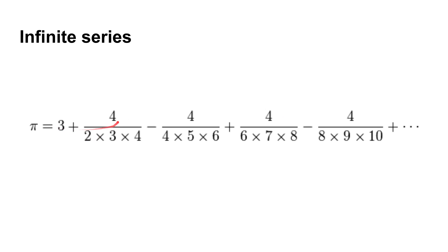So let's have a look at this series. Here it is: it's three plus four divided by two times three times four, minus four divided by four times five times six, plus four divided by six times seven times eight, minus four divided by eight times nine times ten, and so on. So a few things to observe. First of all, the plus and the minus changes — so you start by addition, then you go to subtraction, addition, subtraction, and so on.